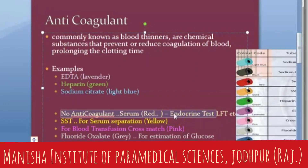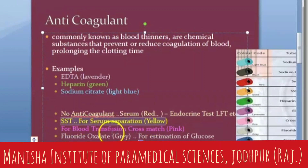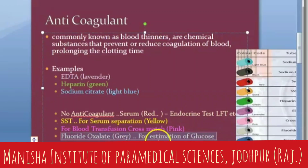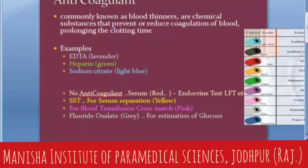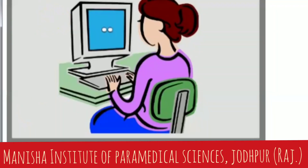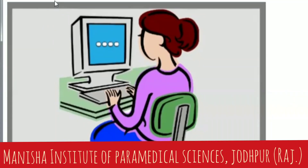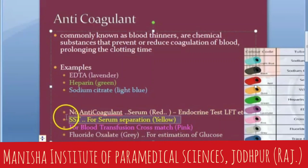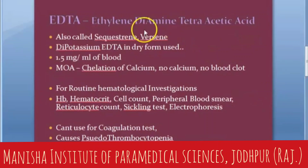Red cap is used for serum collection — for some endocrine tests you draw serum. Yellow is also there but let's not confuse things now. Pink is for blood transfusion cross-matching. Gray contains fluoride and is used for estimation of glucose. So to recap: EDTA is lavender, heparin is green, sodium citrate is light blue, red is for serum with no anticoagulant, pink is for cross-matching, and gray is for fluoride/glucose estimation.